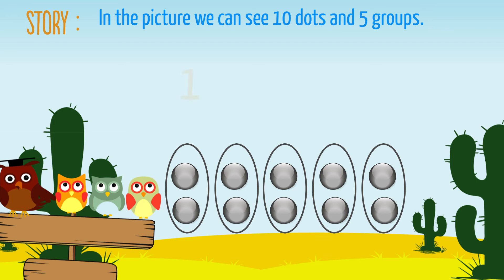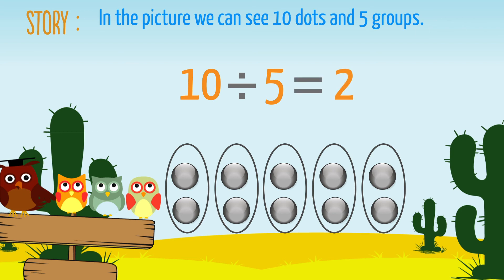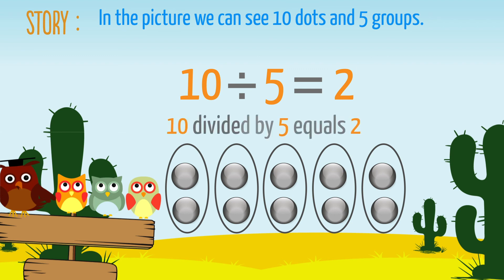When ten dots are shared equally between five groups, each group gets two dots. Or, ten divided by five equals two.